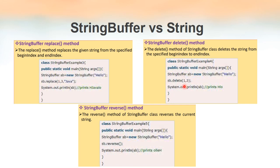We have the delete method, which deletes a certain number of characters. It has two parameters specifying the start and end index. In this example, the index numbers are specified as 1 and 3 — meaning we start deleting from index 1 and delete up to index 3, excluding index 3. So only the characters at index 1 and 2 will be deleted — index 1 is e and index 2 is l — and these two characters are deleted. The end index character is not considered, same as with methods in the String class.